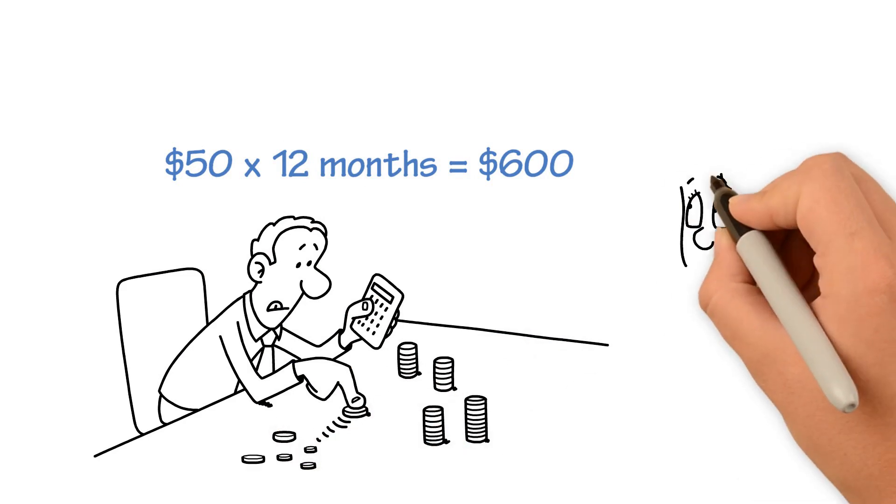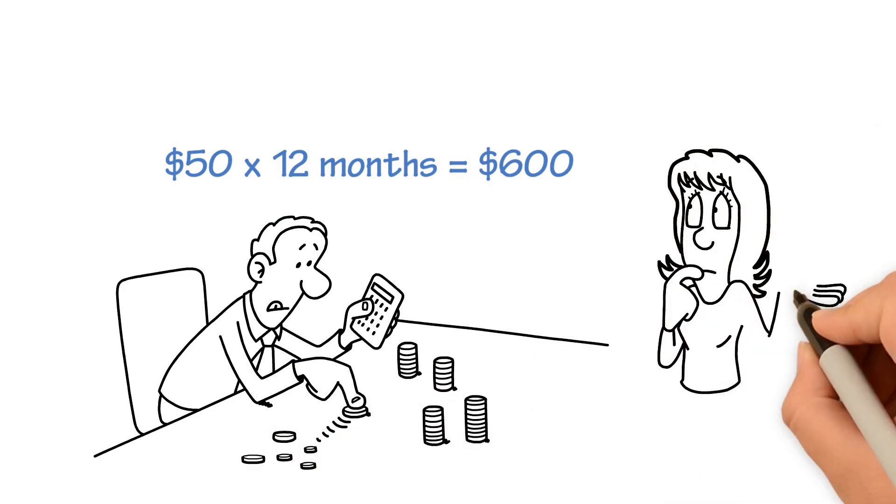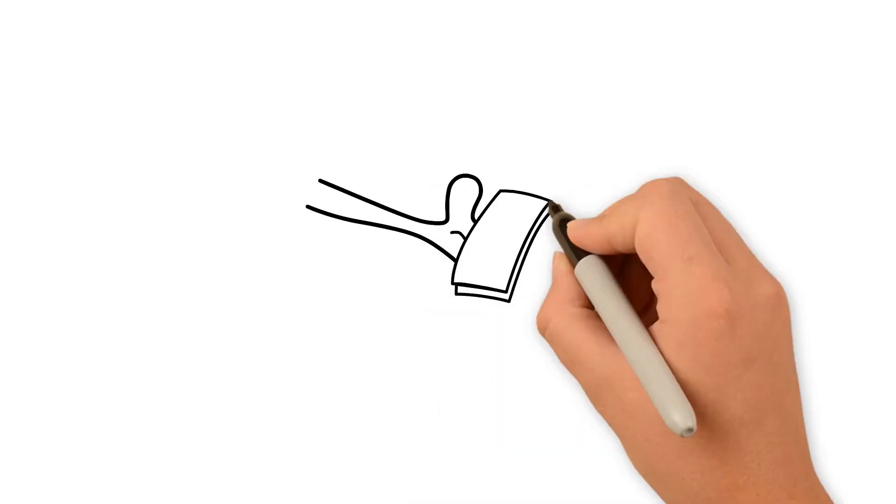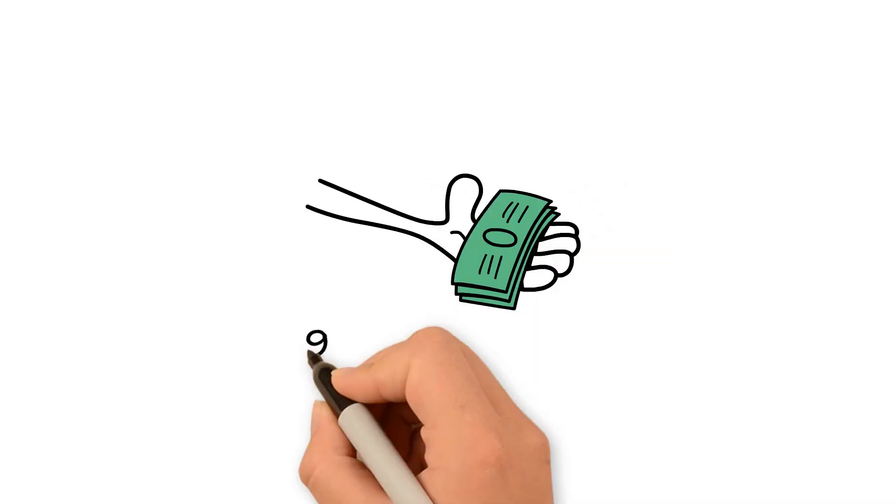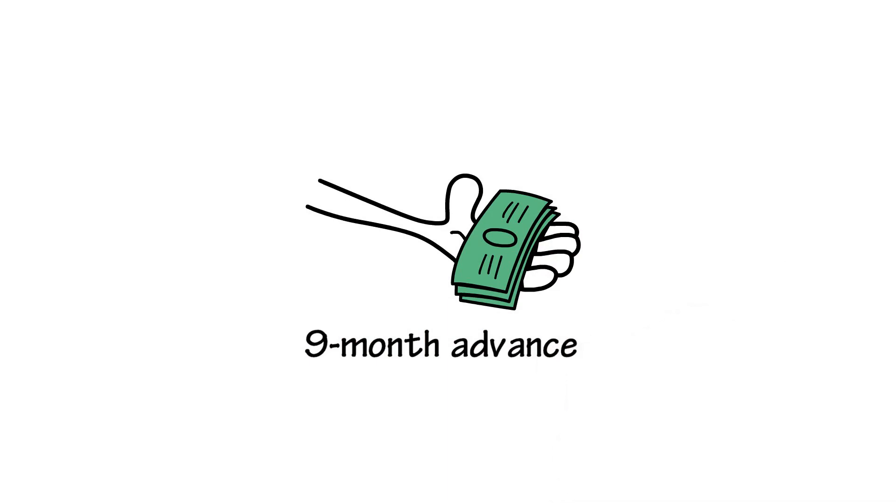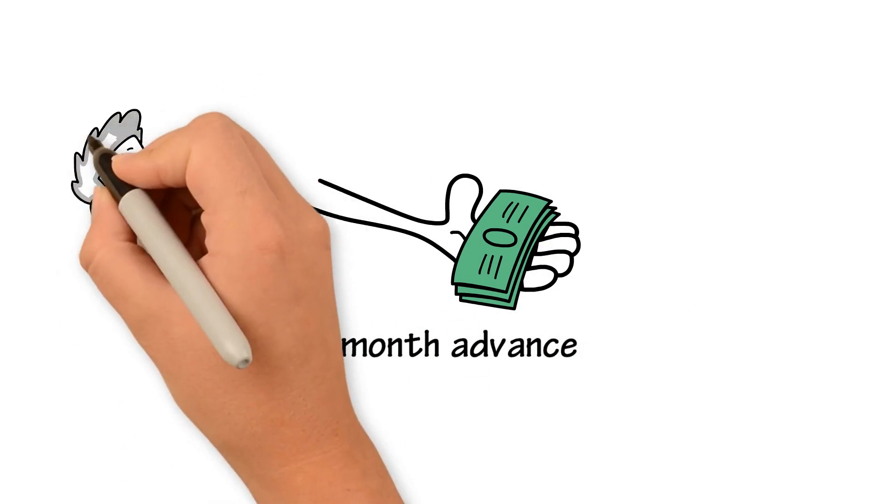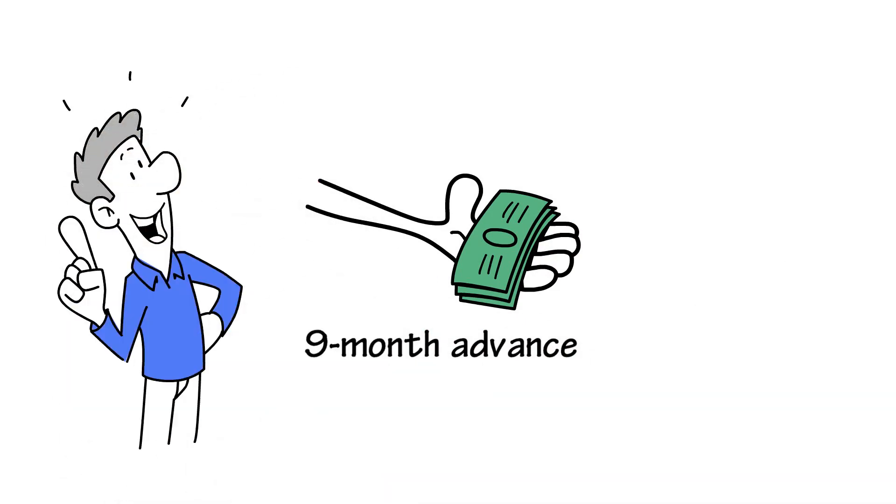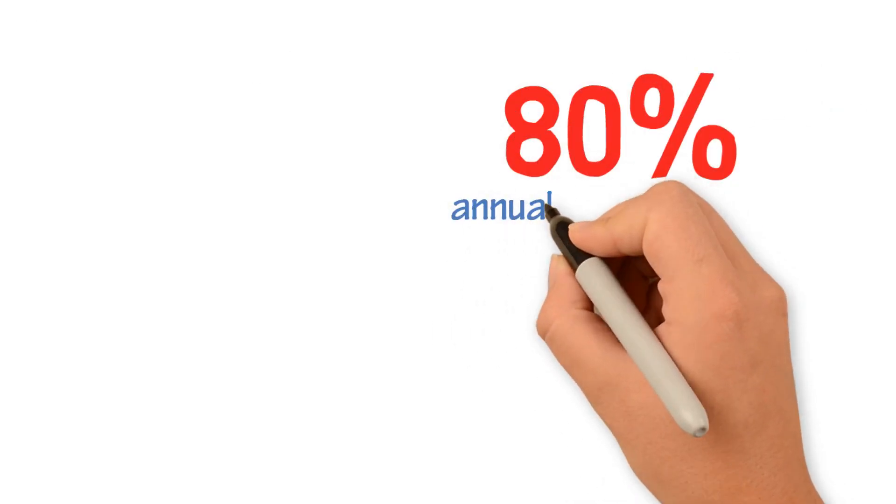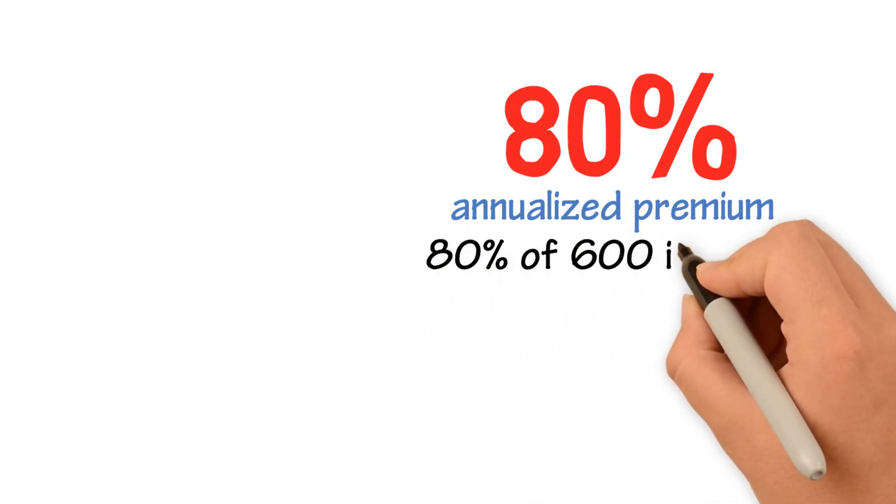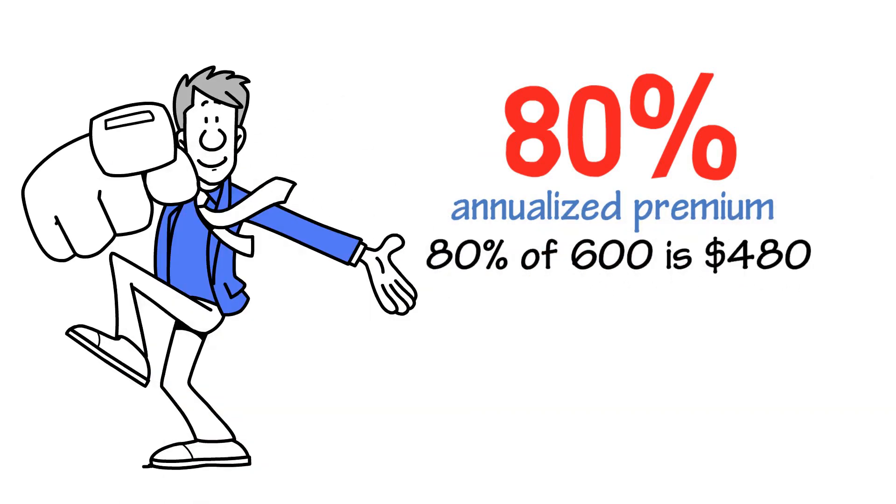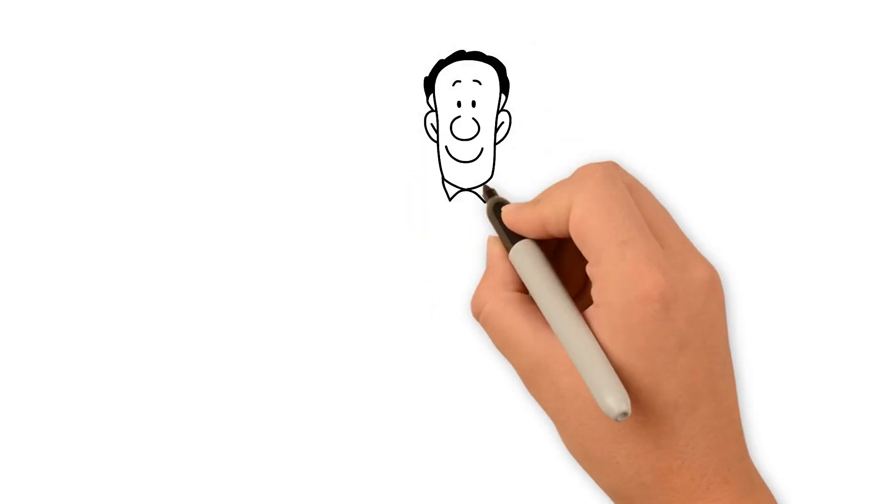Now, keep in mind, annualized premium is not where you're going to get paid. That depends on your commission level. We have structured our commissions as a 9-month advance. And everyone loves 9-month advances. Here's how 9-month advances work. If you're working at an 80%, that means you get 80% of the annualized premium. 80% of $600 is $480. $480 is your total commissions.